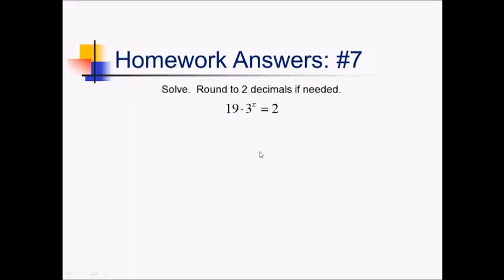For this problem, I'm trying to solve 19 times 3 to the x equals 2. I'll start by isolating the exponential term. So dividing by 19, I've got 3 to the x equals 2 over 19. And now that I've got this exponential term by itself, I'm going to pop that x out using my log rules. And I can't use common bases here because I'm not sure what power of 3, 2 19ths is. So just using logarithms, I've got x log 3 on the left side equals log of 2 over 19 on the right side. Now to get x by itself, I just divide both sides by log of 3. So I've got log of 2 19ths over log of 3, which I definitely need the calculator for.